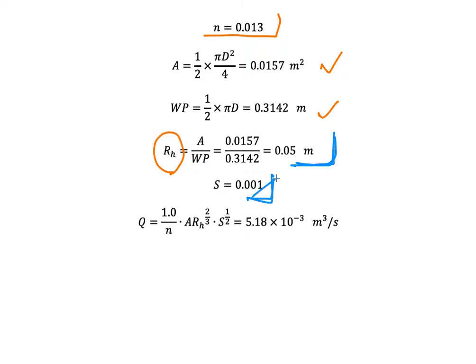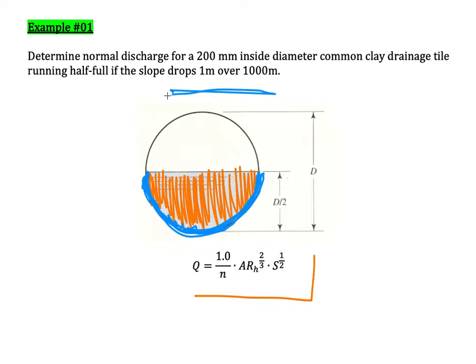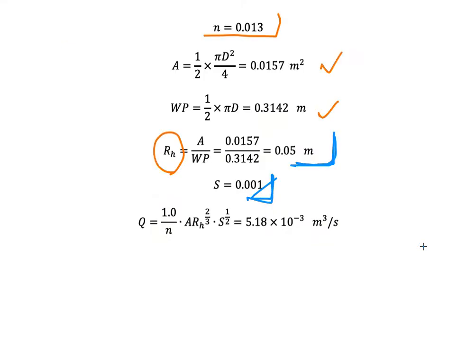According to the question, the slope is 1 meter over 1000 meters, meaning the channel drops 1 meter for every 1000 meters. So the slope S equals 0.001, since 0.001 equals 1 over 1000. Substituting all values, the flow rate Q equals 5.18 times 10 to the power of minus 3 cubic meters per second.